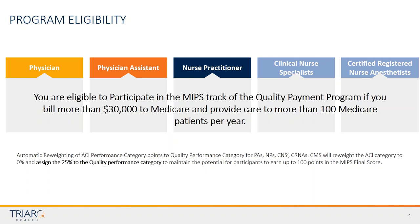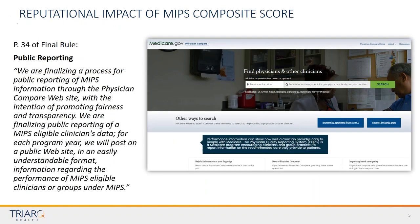It's important to understand which route you participate in MIPS based on your credentials. The MIPS composite score has reputational impact: we take those three performance categories — ACI, quality, and CPIA — mush them together, and out comes your final MIPS composite score. It determines if you pay a penalty or receive an incentive bonus, and it will also be published on the Physician Compare website, so there's more than just a financial reason to participate.